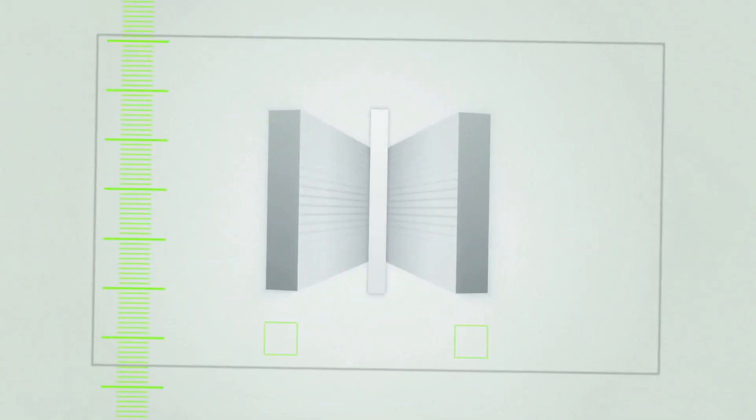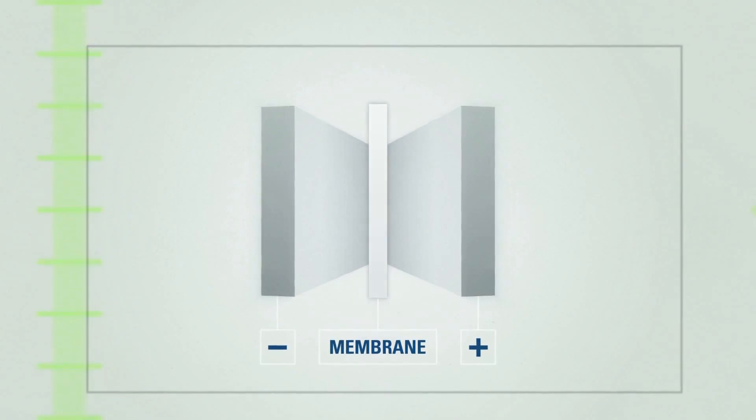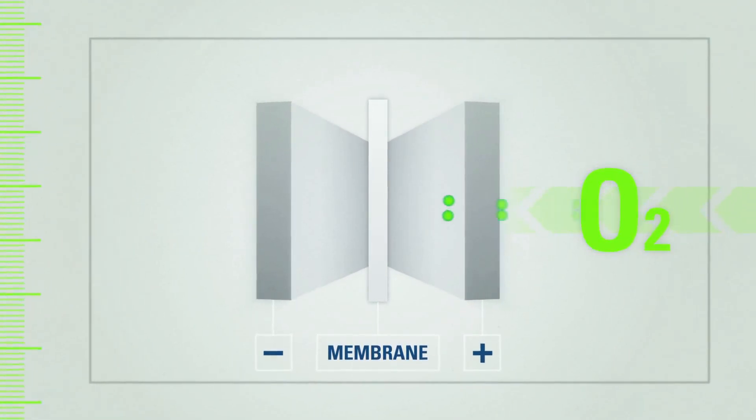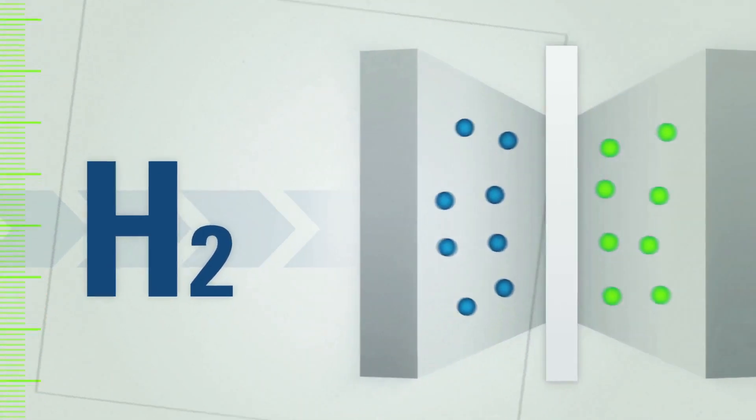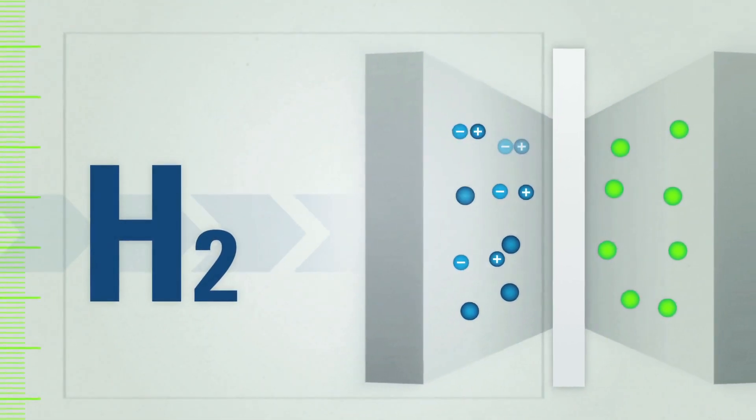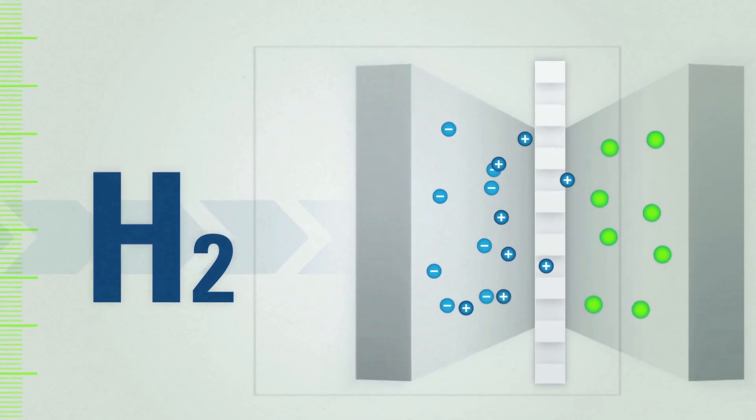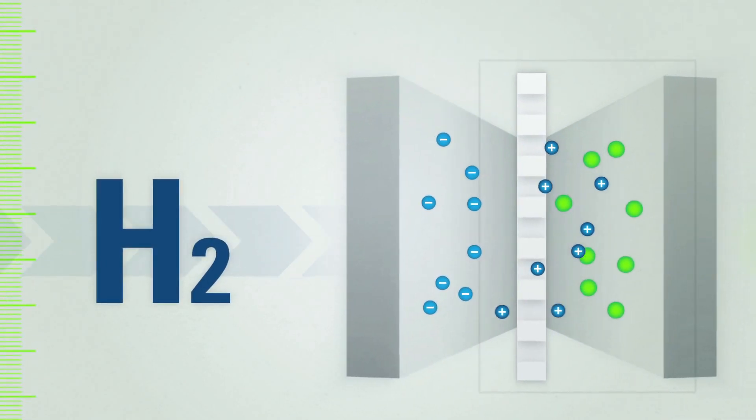Each fuel cell consists of two plates separated by a membrane. Oxygen from ambient air is supplied to one side, with hydrogen on the other. The positive particles of the hydrogen atoms are able to pass through this membrane. The negative particles cannot pass through.